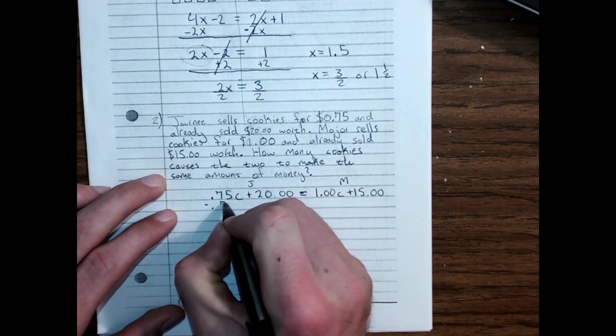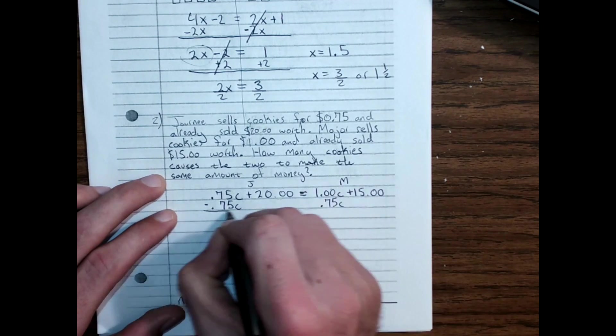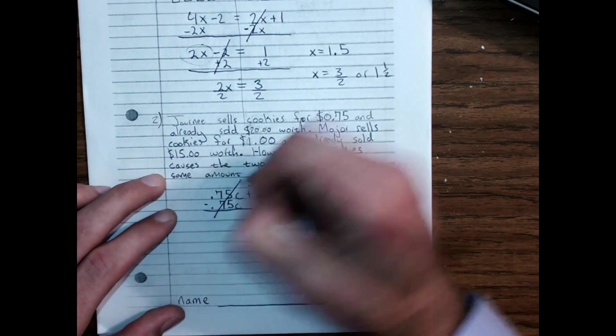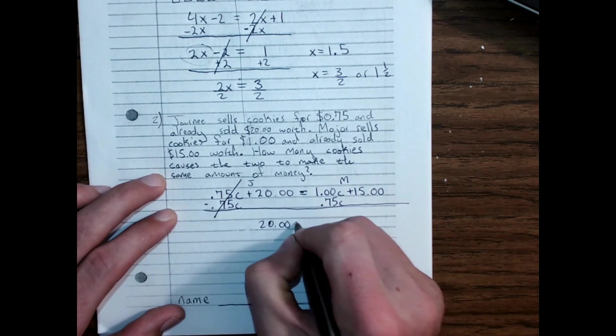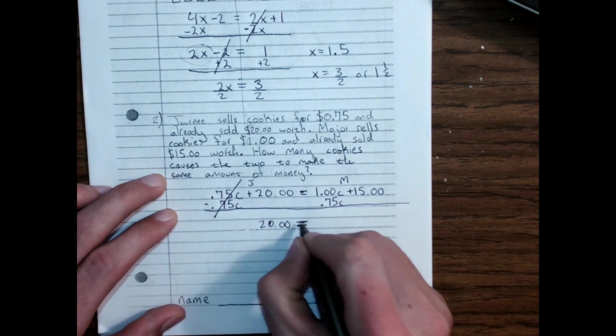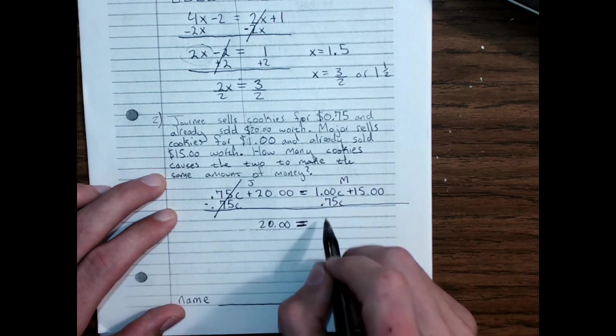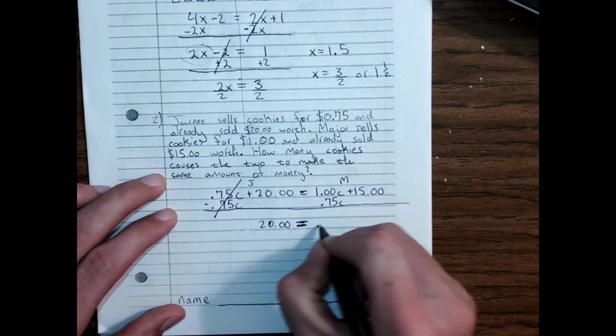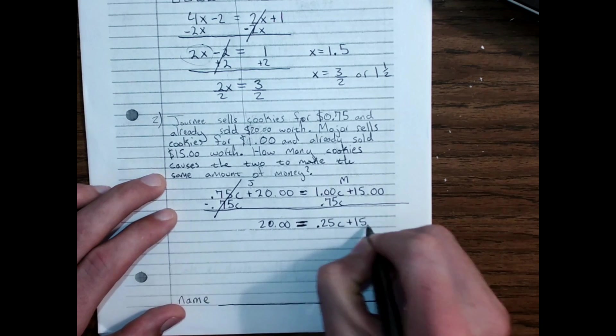I'm going to subtract the smaller of the two variable terms, which is 0.75. Zero pair, $20 comes straight down, equals sign comes straight down. 1.00 minus 0.75, I have $1, I take 75 cents away, that leaves me with 0.25C, plus $15.